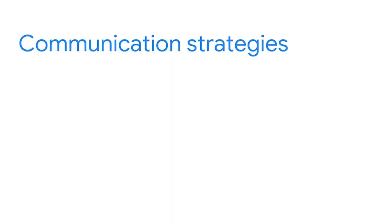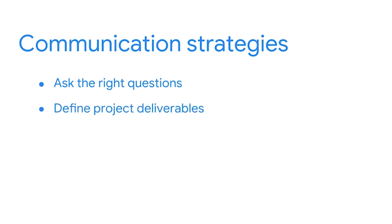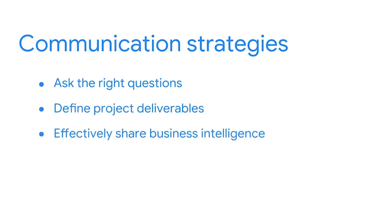Recently, we've been exploring key elements of the business intelligence process. We spent some time getting to know typical BI stakeholders, including the project sponsor, systems analyst, developer, and general business stakeholders. Now, we're going to take that a step further and consider some important communication strategies that BI professionals use when collaborating with these people. These strategies involve knowing how to ask the right questions, define project deliverables, and effectively share the business intelligence you discover.